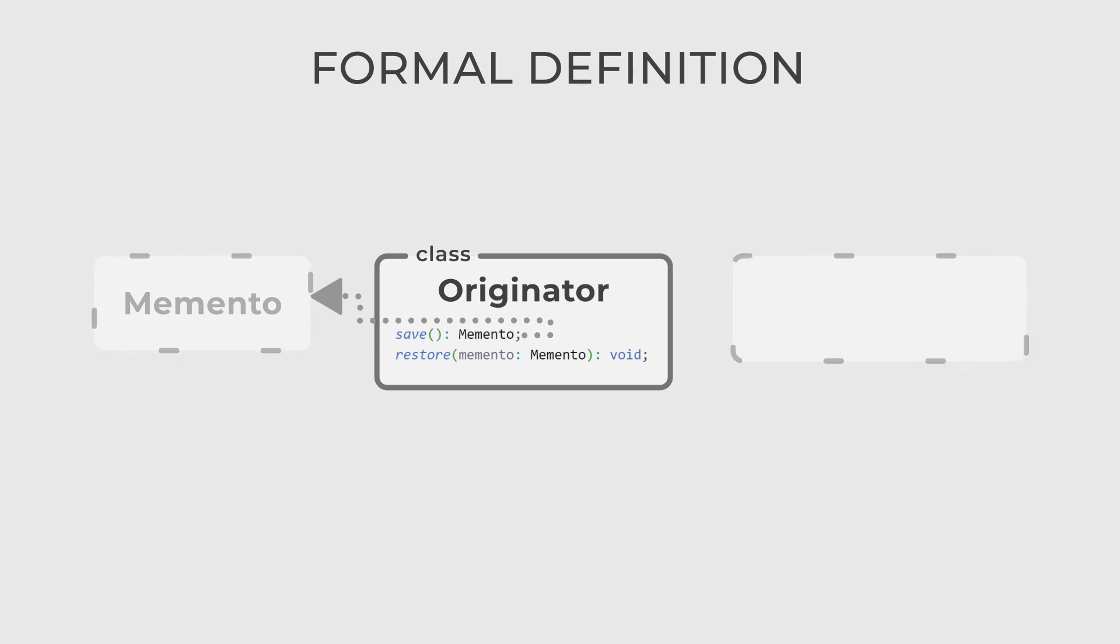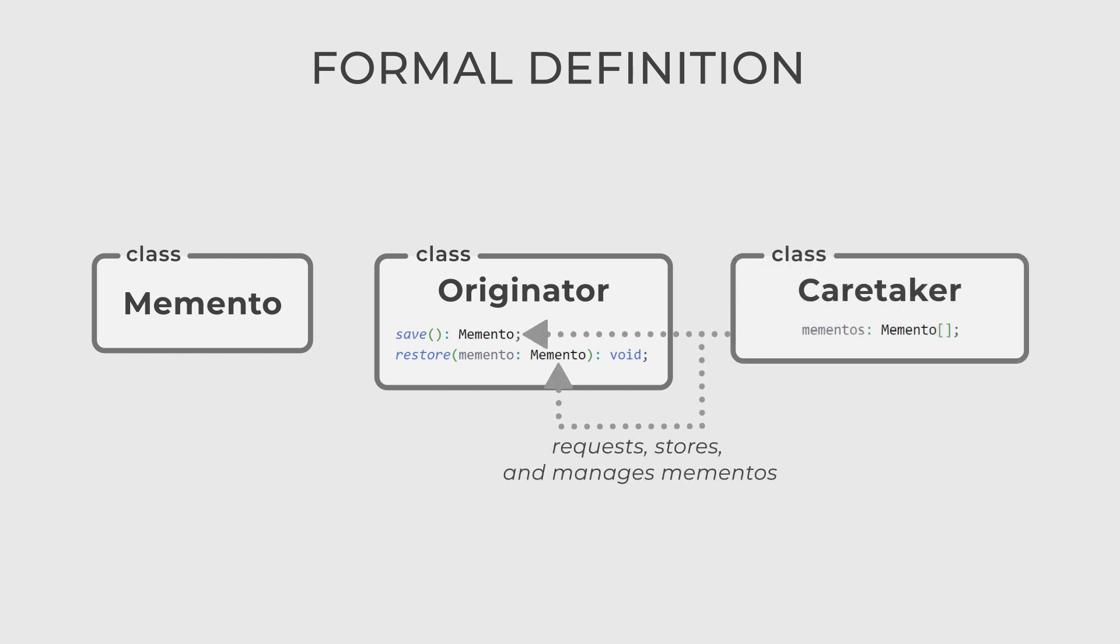There are only three actors here. Originator is the class whose state needs to be saved and restored. It creates memento objects to capture its state and can restore its state from the memento. Memento itself is also a class that stores the internal state of the originator. And caretaker is a class that stores and manages mementos.